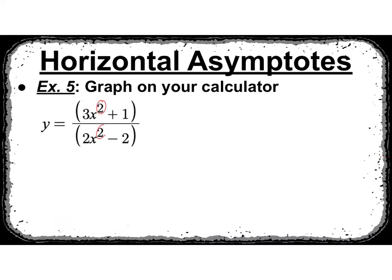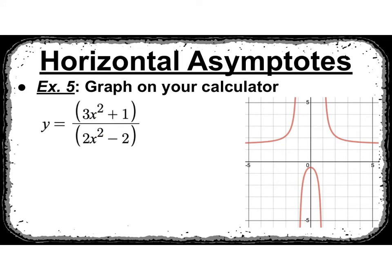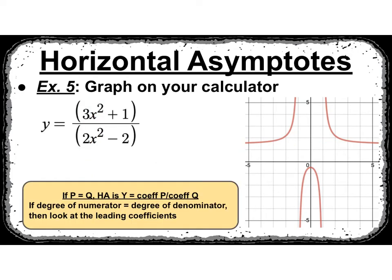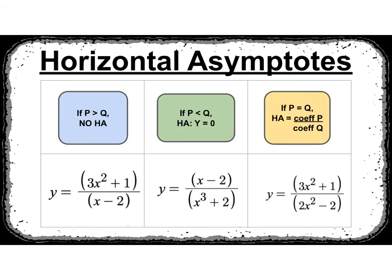And now our degrees are the same — go ahead and graph it. Once your degrees are the same, you need to rely on the leading coefficients. You take your leading coefficient of p over the leading coefficient of q, and that becomes your horizontal asymptote. My horizontal asymptote here is 1 and a half, which I can see in my picture — both tails are approaching it. So if the degree of p equals the degree of q, then your horizontal asymptote is y equals the leading coefficient of p over the leading coefficient of q. You are going to have to memorize these three scenarios.